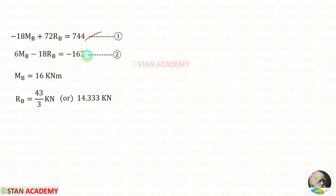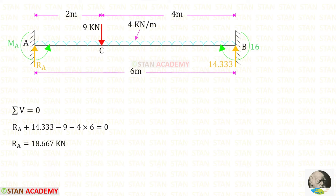Now we have two equations. We can use a calculator to solve them — if you don't know how to solve two equations on a calculator, see the link in the description below. Using the calculator, for Mb I have got 16 kilo newton meter and for Rb I have got 14.333 kilo newton.